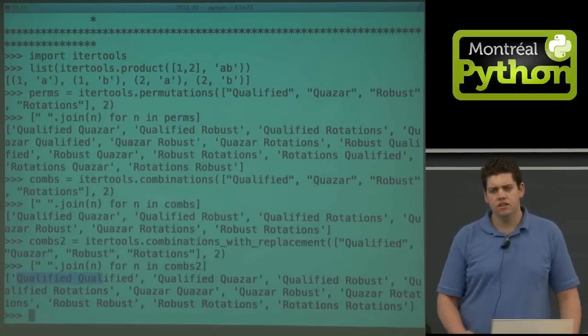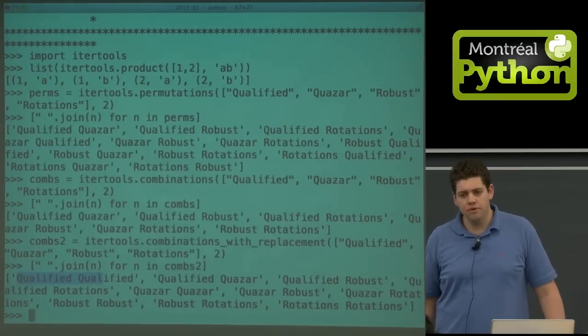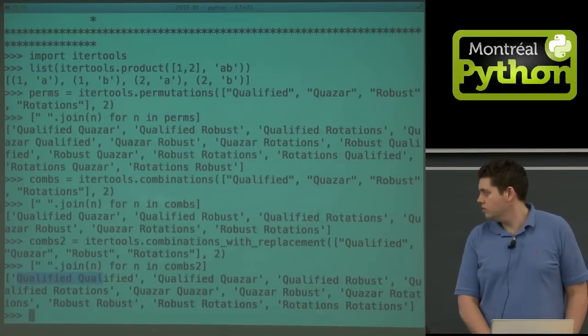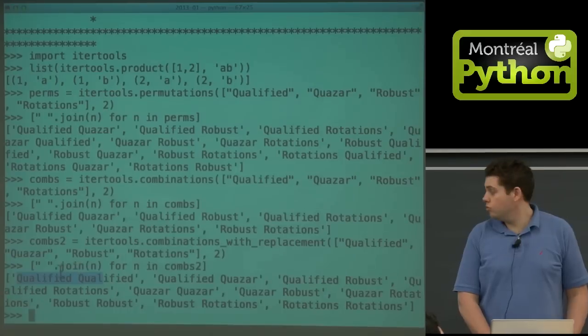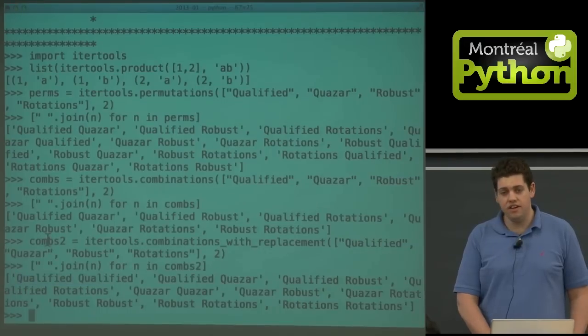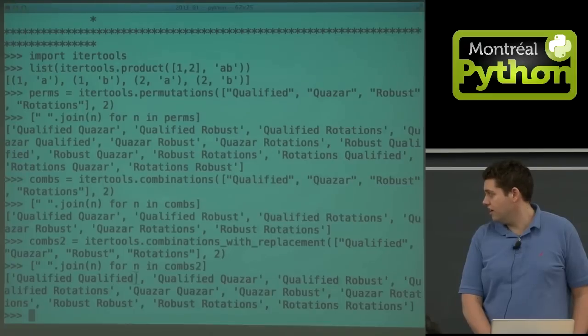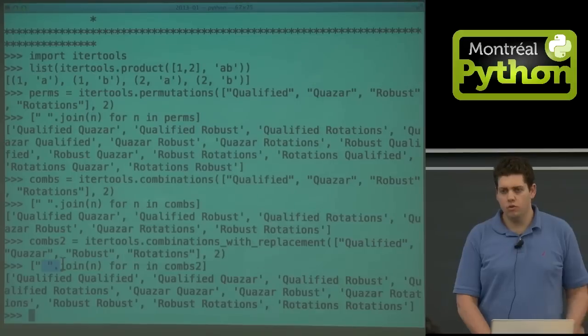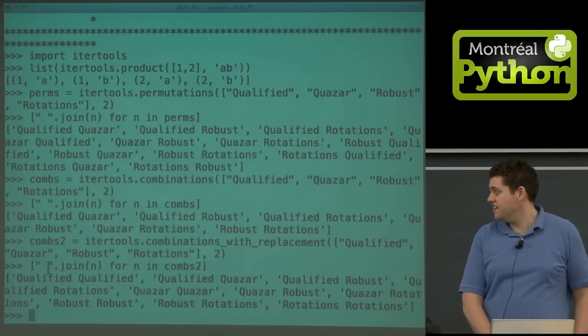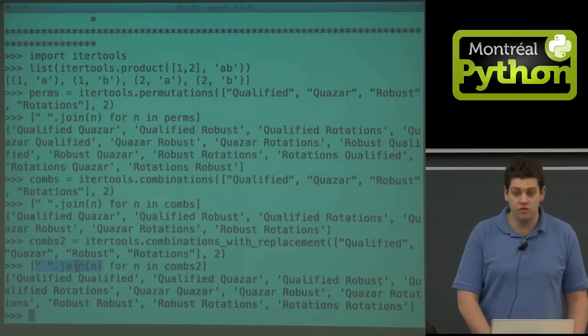So what's actually happening here is you're getting a tuple out of this generator. So combo2 is a tuple of qualified and qualified, qualified and quasar as strings, and I just joined them together to make them easier to print. You're getting a tuple of things. In this case I just joined them with a space, but you can do whatever you want.